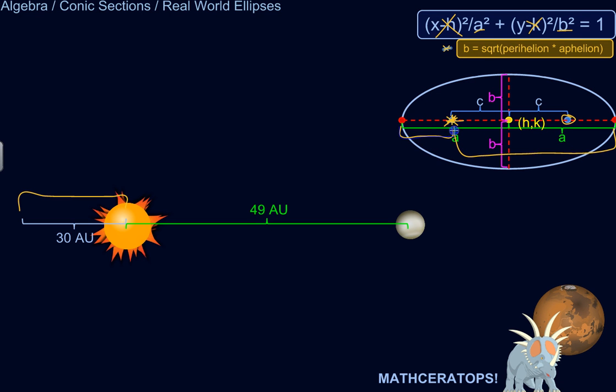And then we need B, which is the semi-minor axis here. And I've got a little formula that relates B to the perihelion and the aphelion. So let's calculate A first. Well, what do we notice here? The perihelion plus the aphelion is equal to this entire distance, the major axis. And A is half of the major axis. So we can just add these two distances up, 30 AU plus 49.